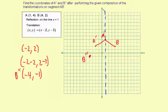And then A double prime, we'll start at the point 1, 4. And then we'll subtract 2 from the X and 3 from the Y. So it'll be 1 minus 2 and 4 minus 3.